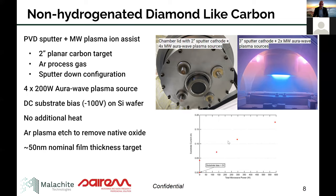Looking at the substrate current as a function of microwave power: with zero bias on the substrate we get no substrate current, as expected. But as soon as we put a bias on it, we start to see an increase in substrate current, which then follows linearly with total microwave power. This shows that we are getting additional ion current at the substrate because of the microwave power increase.